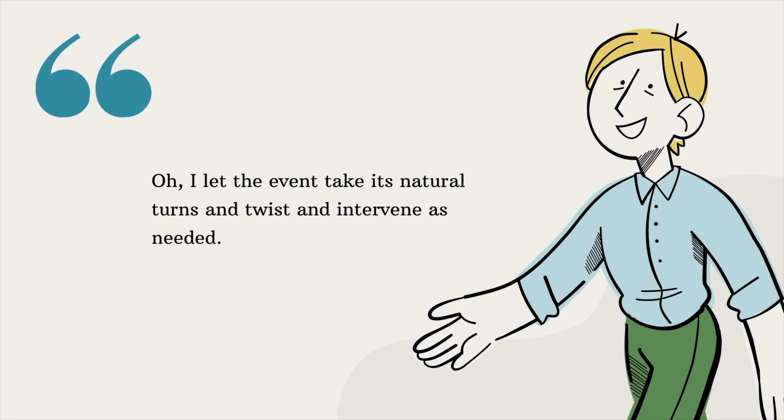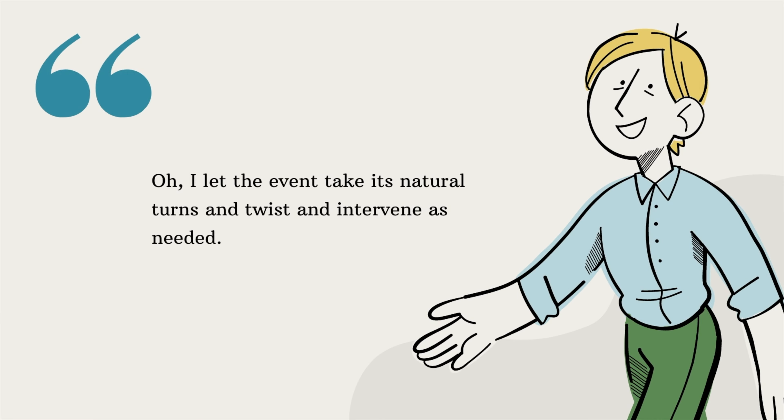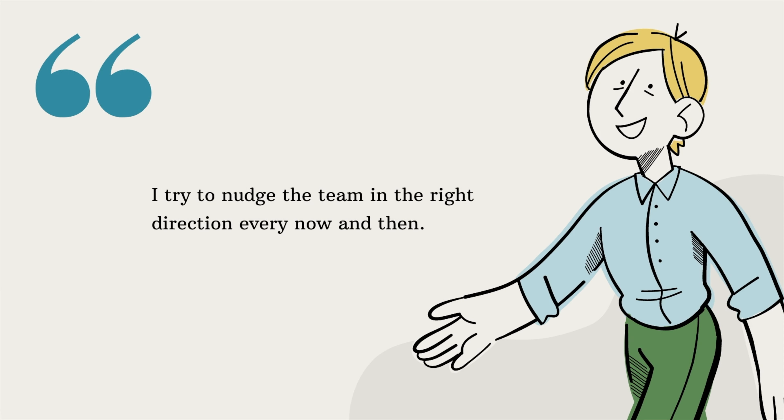When I ask people to describe how they facilitated events and meetings, the responses I get often surprise me. I am referring to the majority of Scrum Masters, not all of them. The answers I get are usually along the lines of: 'I let the event take its natural turns and twists and intervene as needed,' or 'I try to nudge the team in the right direction every now and then.' There is nothing wrong with these answers, but if this is what you think you are supposed to be doing as a Scrum Master facilitator, you will have difficulty getting the team to deliver the precise outcomes at the end of these events and meetings.